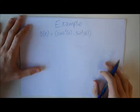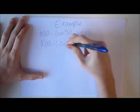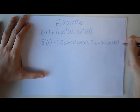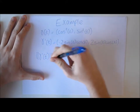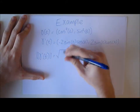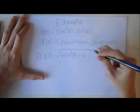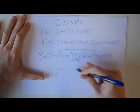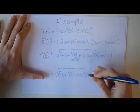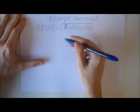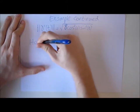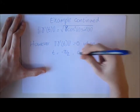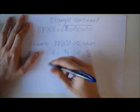For example, gamma(t) = (cos^2 t, sin^2 t). The differential of this is (-2 sin t cos t, 2 sin t cos t). The length of this is the square root of 8 sin^2 t cos^2 t. However, the length of the function is 0 when t is -π/2, 0, π/2, π, etc. So this means it's not regular for all t.